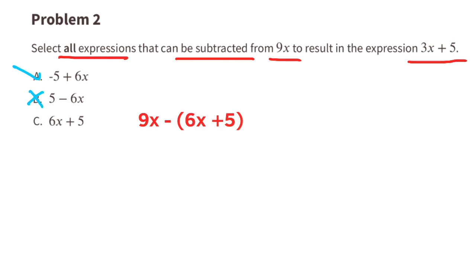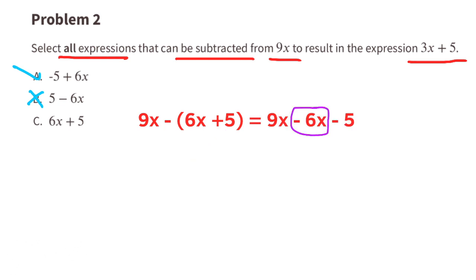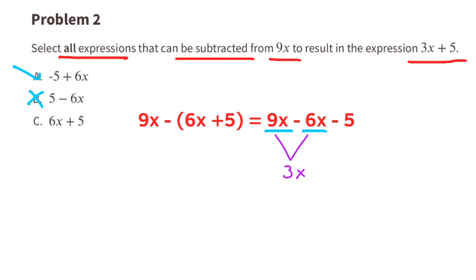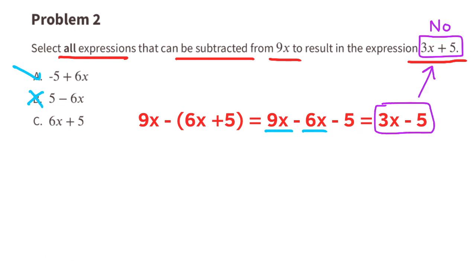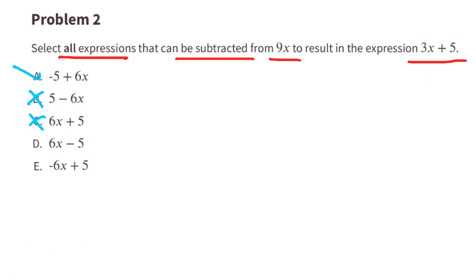Option C: a negative times a positive is a negative. So this expression reads 9x minus 6x minus 5. There are terms with x's and terms with no x's, so let's combine the like terms. 9x minus 6x is 3x, so the expression reads 3x minus 5. Since 3x minus 5 is not the same as 3x plus 5, this expression is not equivalent to the original.